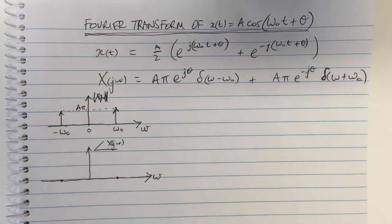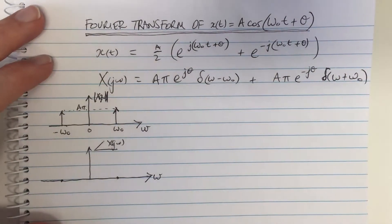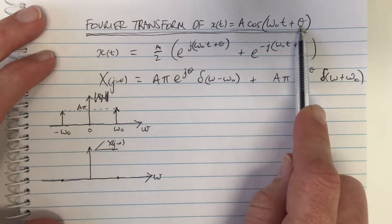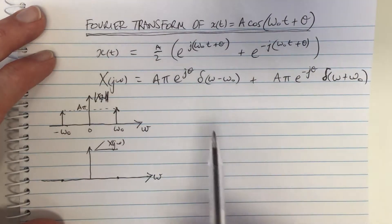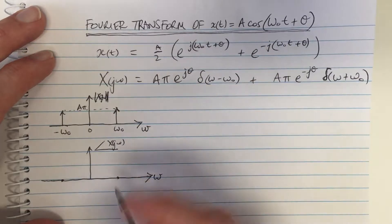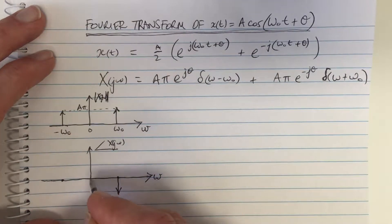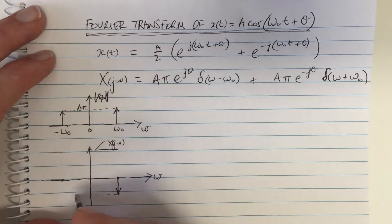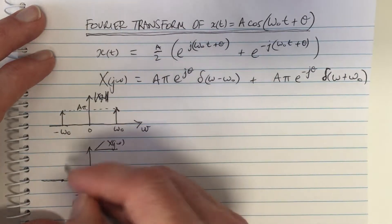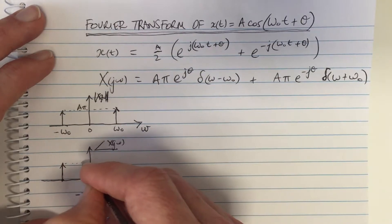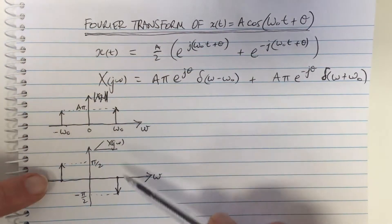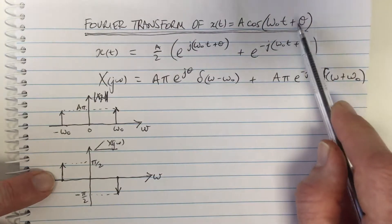So what if there is an offset? Let's pick theta equals minus pi over 2. If it's minus pi over 2, then for the positive omega the angle is minus pi over 2 — so this would be a delta function at angle minus pi over 2. And this one would be where the minuses cancel, giving a positive angle at the negative frequency of positive pi over 2. So this would be the Fourier transform magnitude and phase plot when theta equals minus pi over 2.